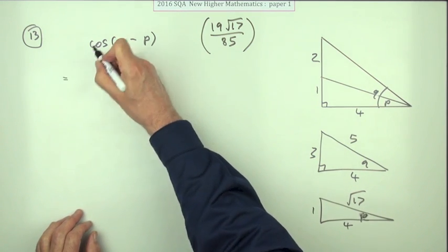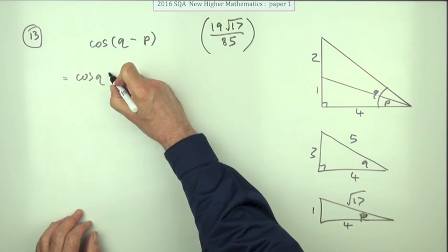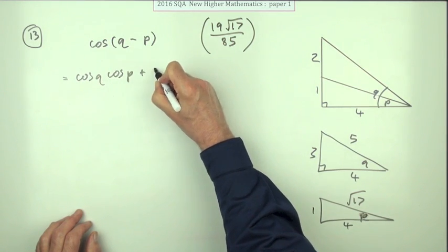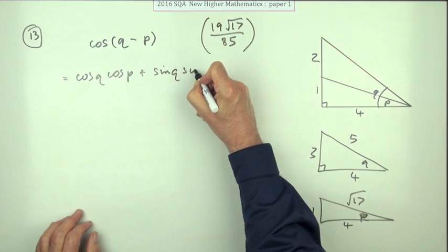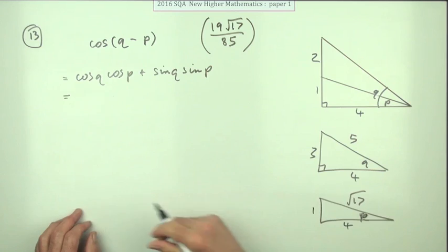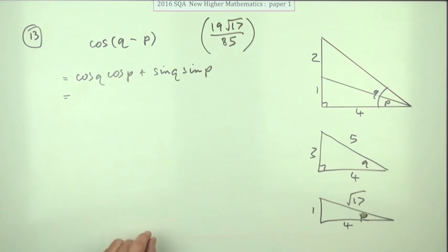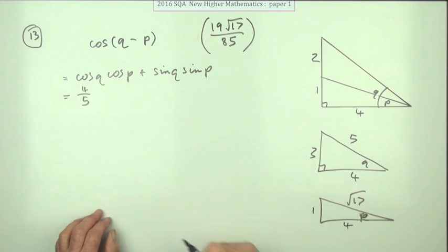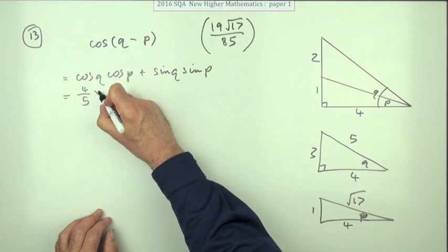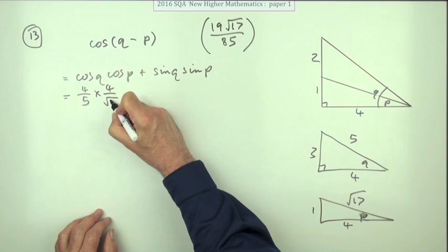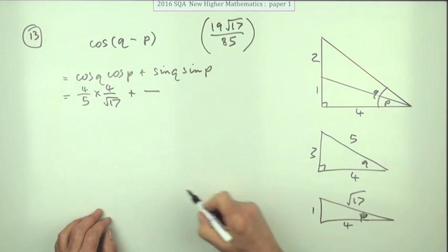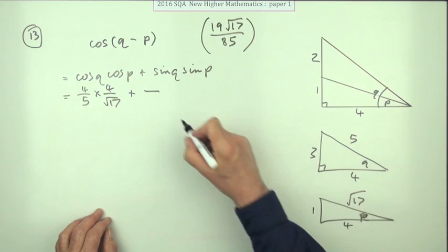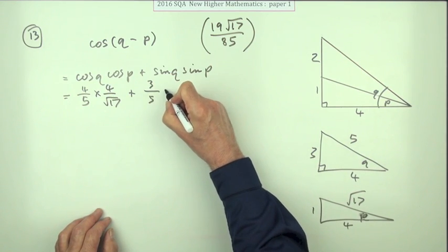Then it's just a case of looking up the front: cos q cos p plus sin q sin p. Then start picking out the bits and pieces. The cosine of q, the adjacent side is four. The cosine of p, the adjacent side is four again over root 17. Plus, now the signs: the opposite side is three for q and the opposite side is one for p.